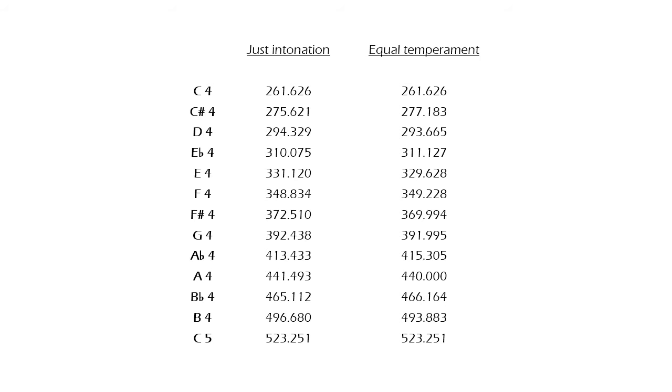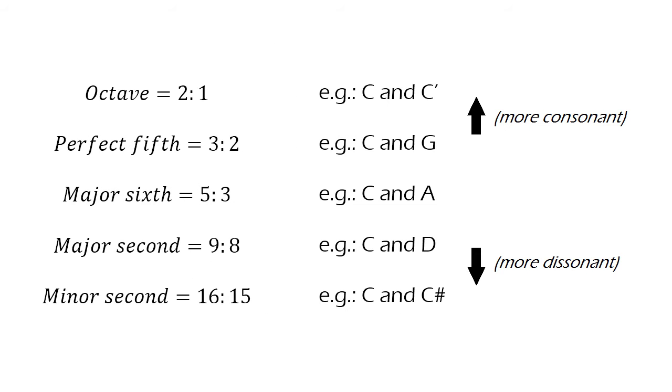Using these ratios, we can obtain the frequencies of the notes in just intonation and compare them to the frequencies in equal temperament. With the numerical representations of musical intervals, we can also predict how consonant two notes will sound when played simultaneously. Generally, the smaller the numbers, the more consonant the notes will sound together.